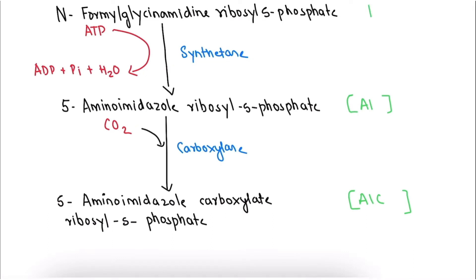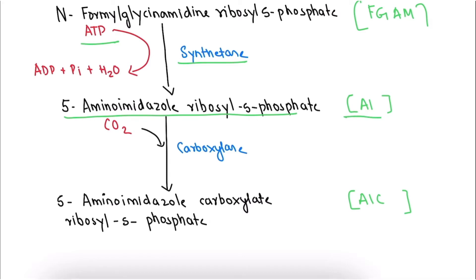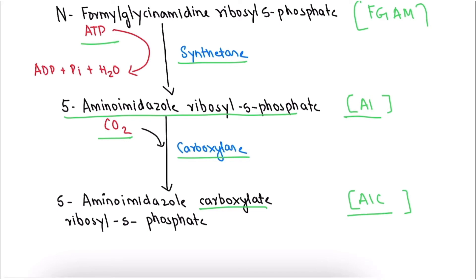In the third slide, FGAM is converted to 5-aminoimidazole ribosyl-5-phosphate (AI) in the presence of synthetase and ATP. The next step is carboxylation, where CO2 contributes C6 to the purine ring in the presence of enzyme carboxylase, forming 5-aminoimidazole carboxylate ribosyl-5-phosphate. We remember this as AIC — A for amino, I for imidazole, and C for carboxylate. In the third slide, remember AI and AIC.